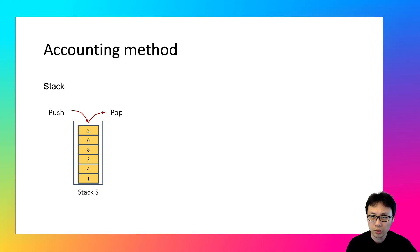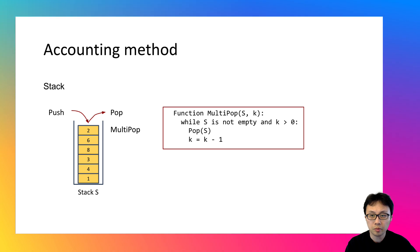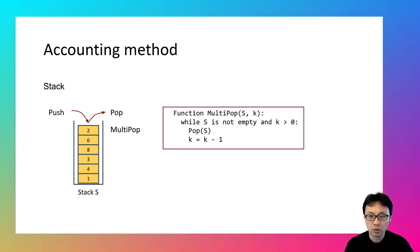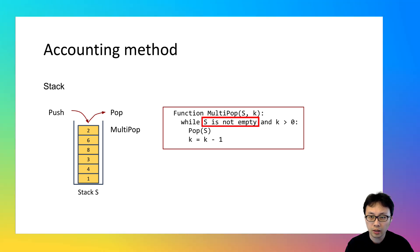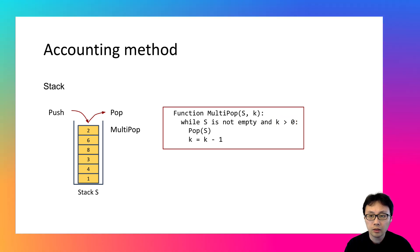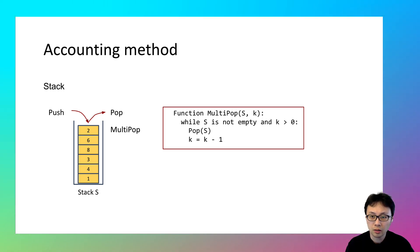Beyond push and pop, there's one more operation we want to discuss: multipop. It aims at removing k elements from a stack. This operation takes two parameters — a stack and the number k. The while loop has two conditions: the first checks if the stack is empty, and the second checks whether k is bigger than zero. The multipop operation keeps using the pop operation to remove elements, decrementing k each iteration. It will remove at most k elements; if the stack has fewer than k elements, all of them will be removed.